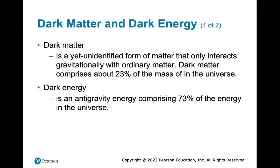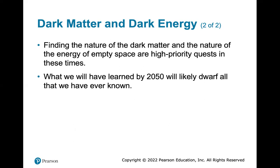Dark matter is a yet unidentified form of matter that only interacts gravitationally with ordinary matter. Dark matter comprises about 23% of the mass of the universe. Dark energy is an anti-gravity energy comprising 73% of the energy in the universe. These concepts arise because calculations of what we observe don't act the way they should, so it is surmised that there's dark matter and dark energy, and scientists are actively looking for it. Finding the nature of dark matter and the energy of empty space are high-priority questions today. What we will have learned by 2050 will likely dwarf all that we have ever known.